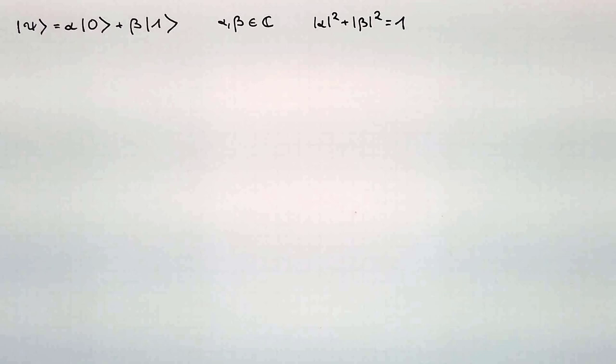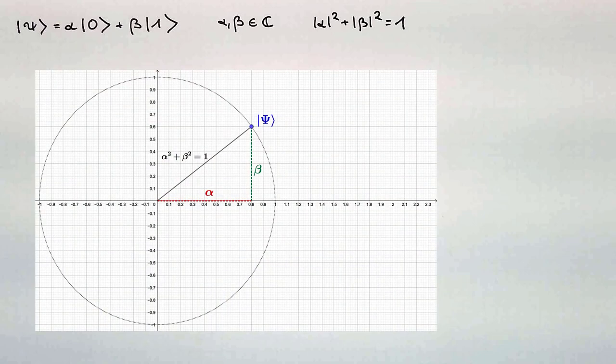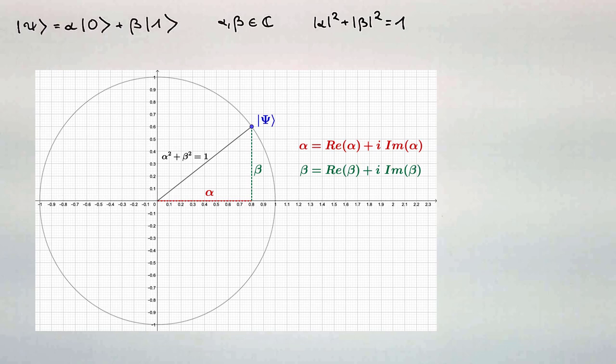If these two values would be real numbers, we could easily visualize the state of a quantum bit as a single point in the two-dimensional Euclidean space, with alpha and beta as coordinates of this point. But it's not that easy. The amplitudes are complex numbers, each having a real and an imaginary part. This sounds like a problem for visualizing a qubit, as one may think that we need four dimensions for this task as we have four real numbers: the real and imaginary part of alpha and the real and imaginary part of beta.